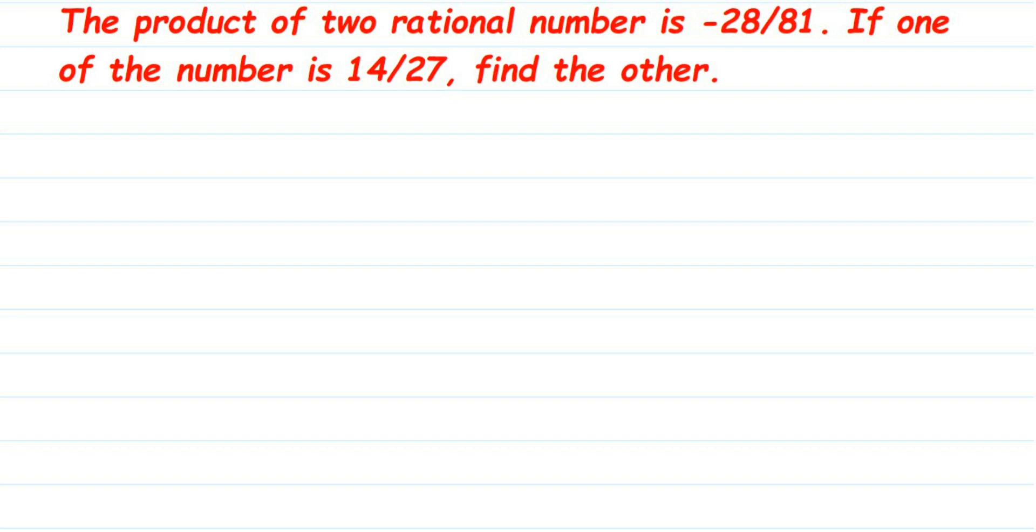Hello everyone, here is a question from rational numbers. The question is, the product of two rational numbers is minus 28 by 81. If one of the number is 14 by 27, find the other.